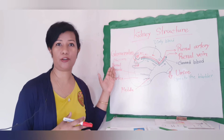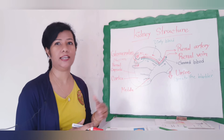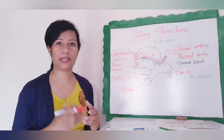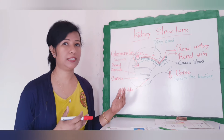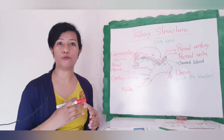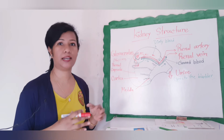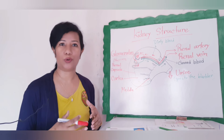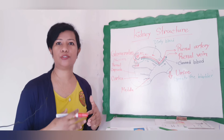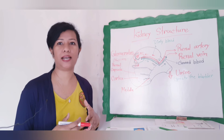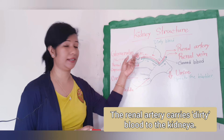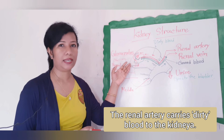The blood that enters the kidney consists of more oxygen and less carbon dioxide, a large concentration of water — approximately 90 percent water — along with mineral salts and nitrogenous waste products. This is more than the blood that leaves the kidney.